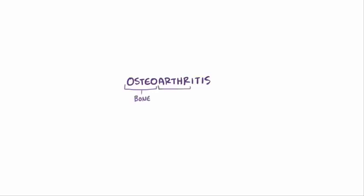Osteo means bone, arth refers to arthron which means joint, and itis means inflammation. So osteoarthritis is a disease involving inflammation of the bone and joint cartilage.